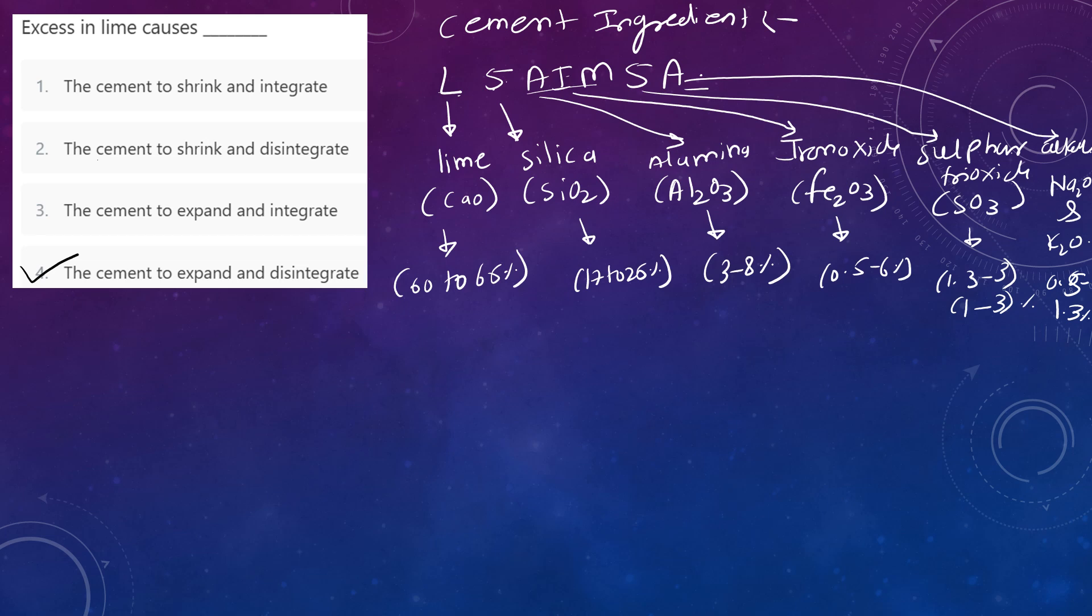Working of lime content: if lime content is excess, cement gets disintegrated and expands. If we control the given amount of lime in cement, then cement gains strength and achieves soundness property. If we reduce the content of lime, we reduce the strength and setting time.